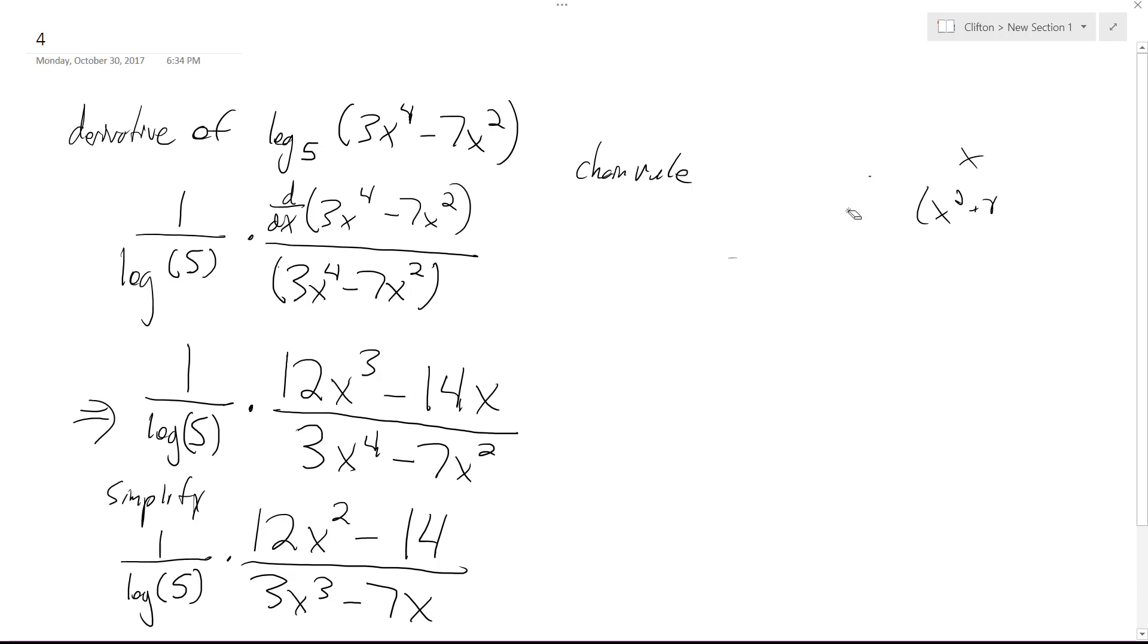But hopefully that helps here. So I take the derivative of what's inside here on top, and I get 12x cubed minus 14x over 3x to the 4th minus 7x squared, then times the 1 over natural log.